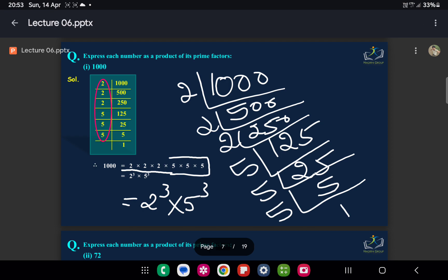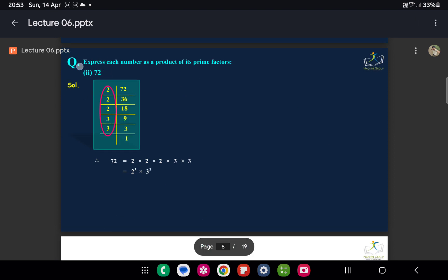Another problem we have is 72. So 72 can be divided by 2 to get 36, then 36 divided by 2 gives 18.